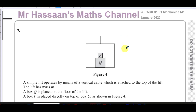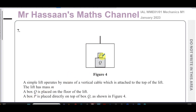Welcome back to Mr. Hassan's Maths channel. I'm now answering question number seven from the Mechanics M1 January 2023 International A-Level Edexcel exam. This question is about a lift which operates by means of a vertical cable attached to the top of the lift. The lift has a mass m. A box Q is placed on the floor of the lift, and a box P is placed directly above Q on top of Q, as shown in figure four.